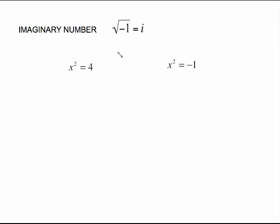And where this comes from is this idea. If I give you this equation, x² = 4, you already know how to solve that. To undo the squared, you take the square root of both sides. And this is going to give us x equals plus or minus 2, because either one of those numbers squared would give us 4.